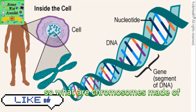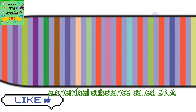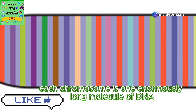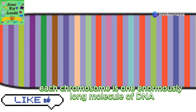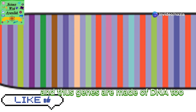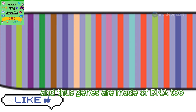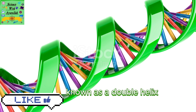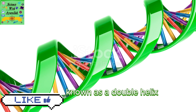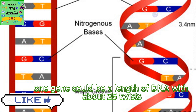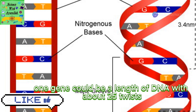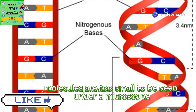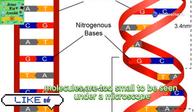So what are chromosomes made of? A chemical substance called DNA. Each chromosome is one enormously long molecule of DNA, and thus genes are made of DNA too. DNA has a shape like a twisted ladder known as a double helix. One gene could be a length of DNA with about 2,500 twists.